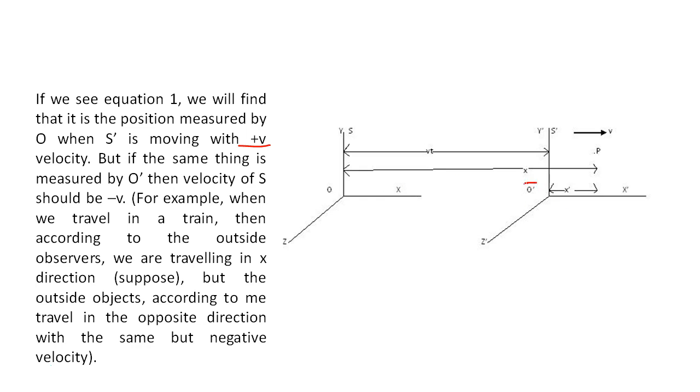But if the same thing is measured by O dash, then velocity of S should be negative. For example, when we travel in a train, then according to the outside observers, we are traveling in x direction, suppose. But the outside objects, according to me, travel in the opposite direction with the same but negative velocity.